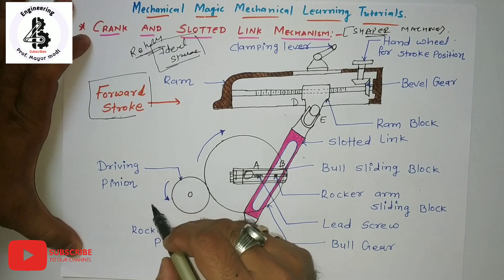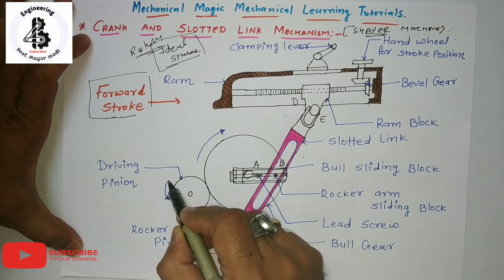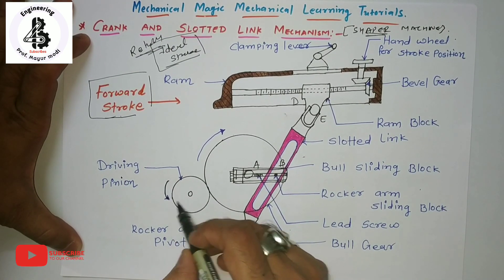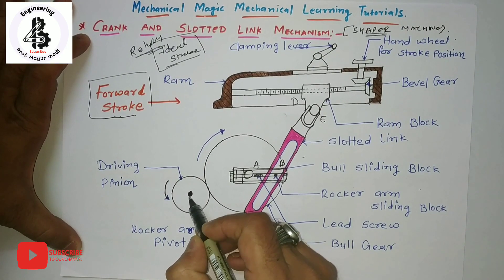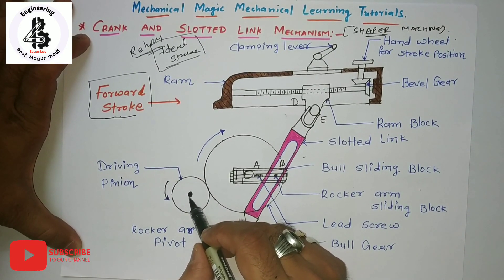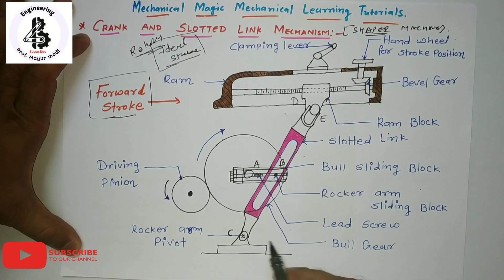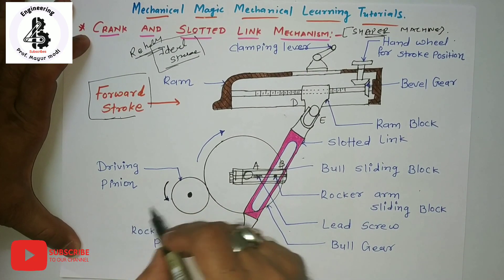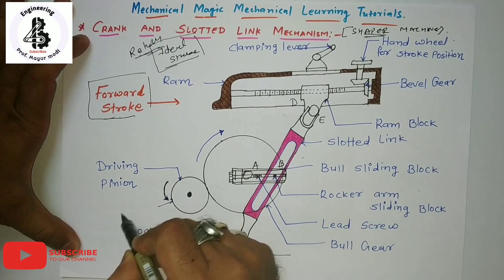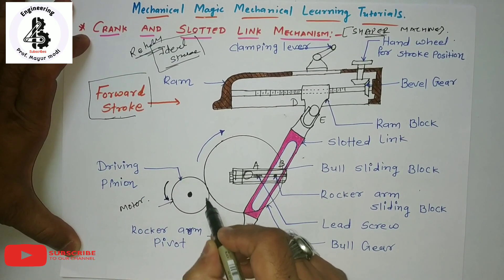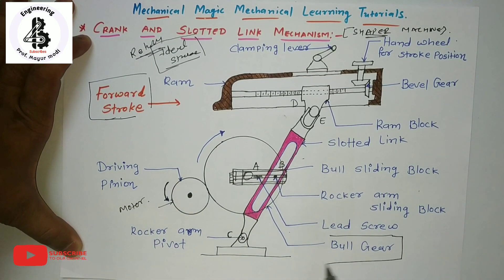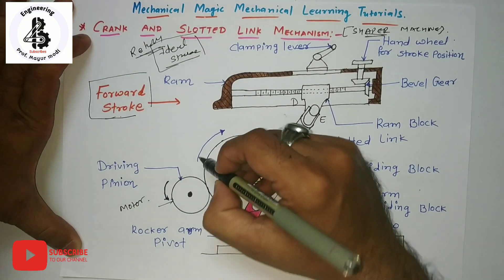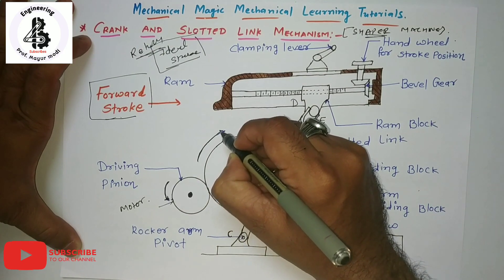Starting with the driving pinion — it rotates in the anticlockwise direction. It receives power from an individual motor and transmits motion to the bull gear. By the rotation of the driving pinion receiving power from the motor and connecting with the bull gear, the bull gear rotates in the clockwise direction.